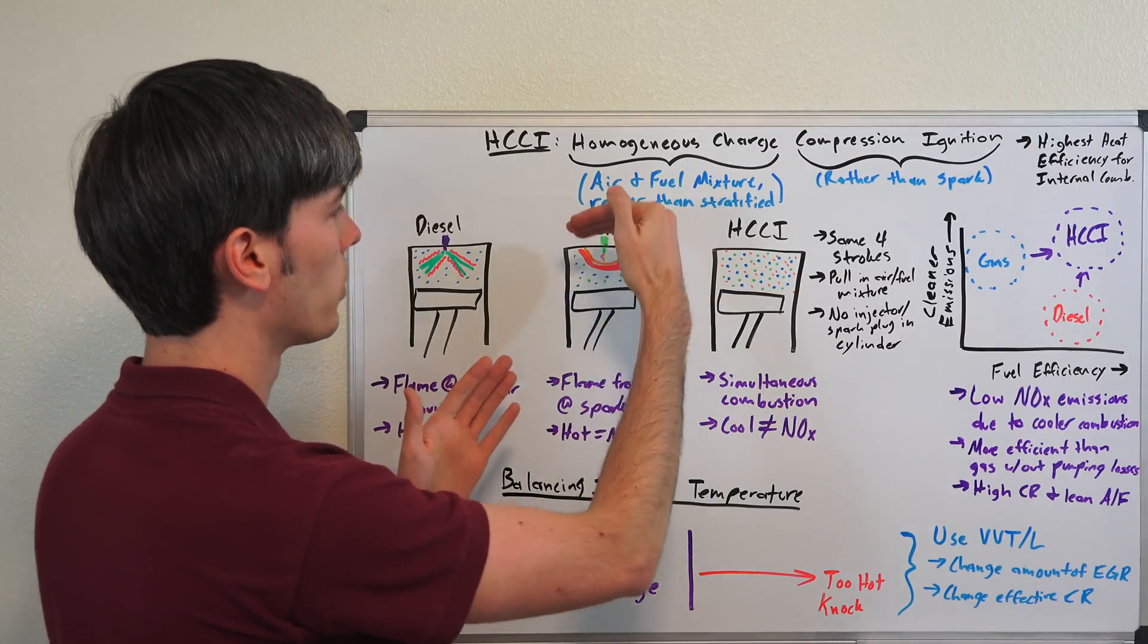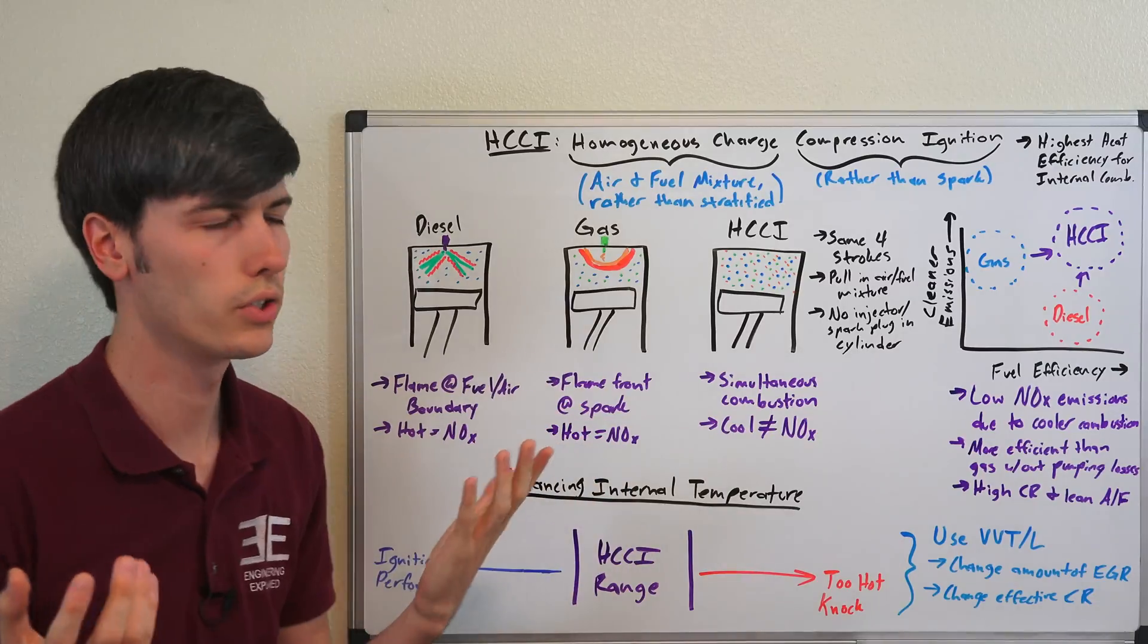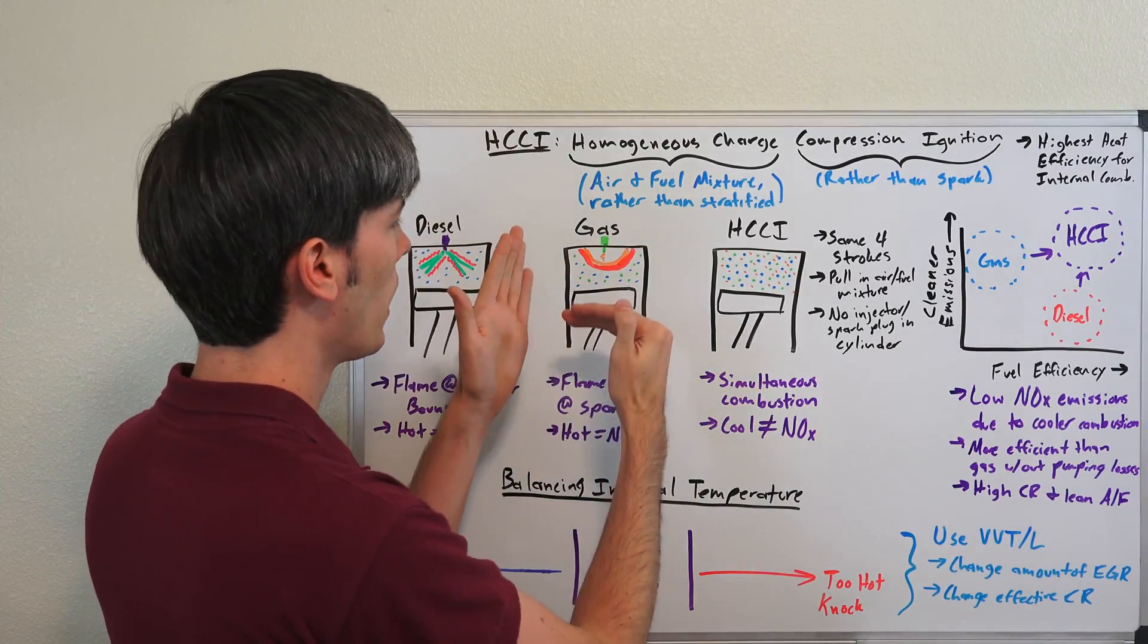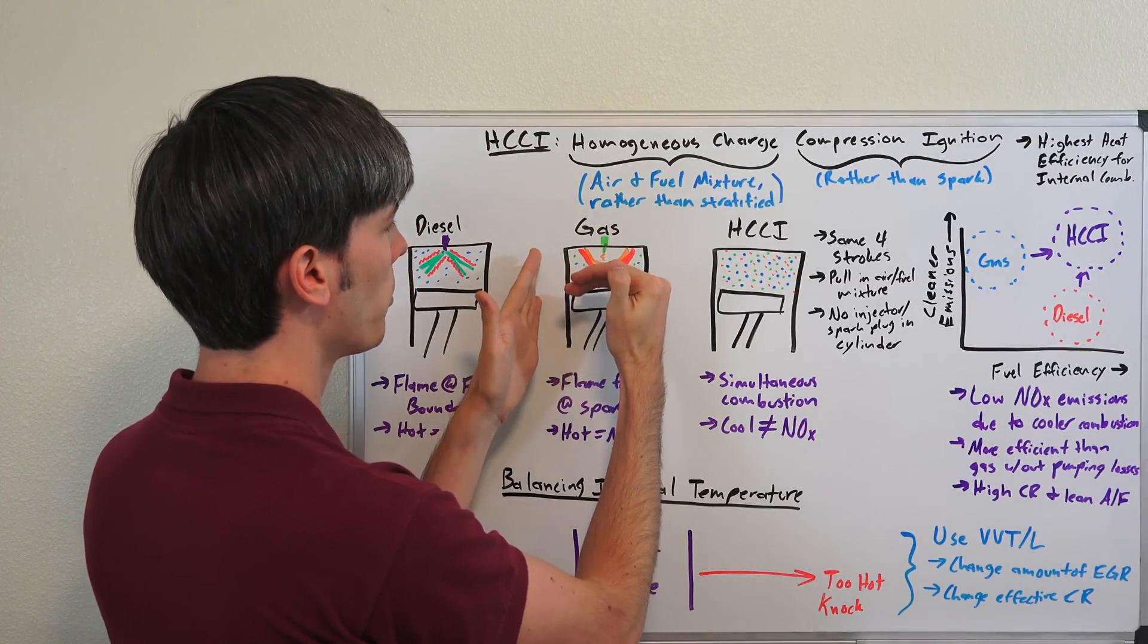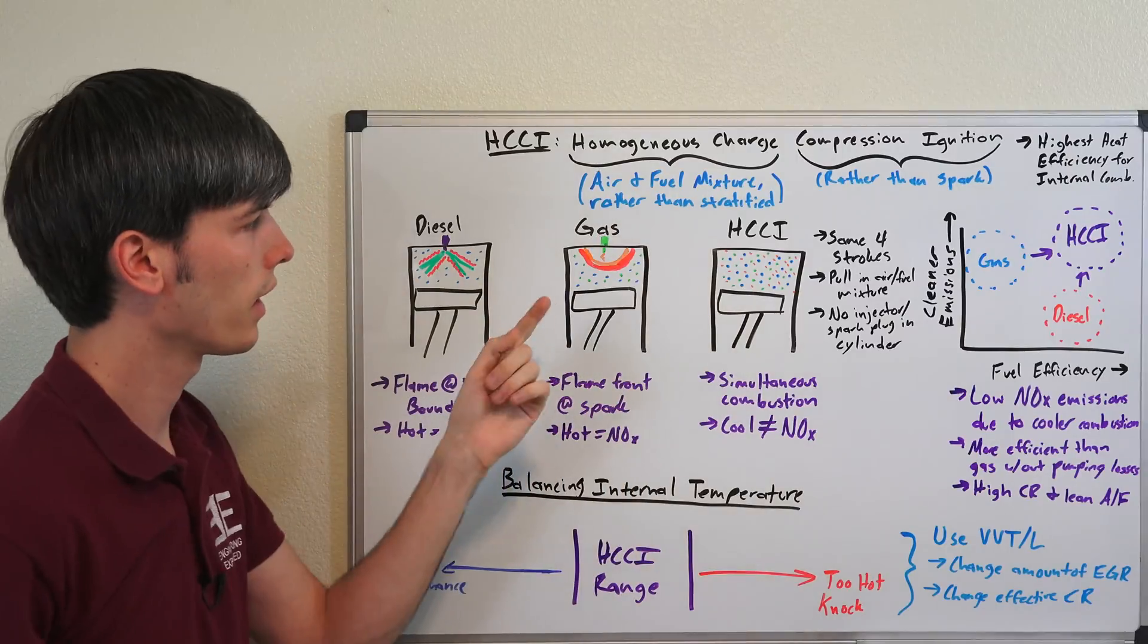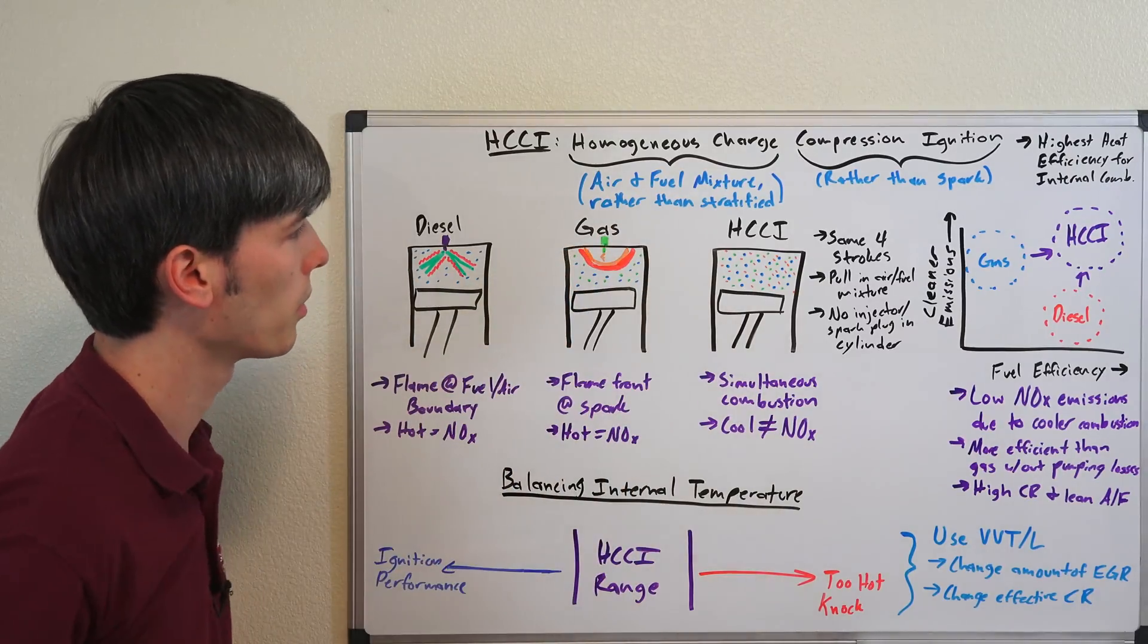In a gasoline engine, you'll have pulled in that air and fuel or with direct injection engines you can spray in that fuel and regardless you compress that air and fuel mixture and then a spark ignites it. So you have that flame front that travels outward from the spark plug.